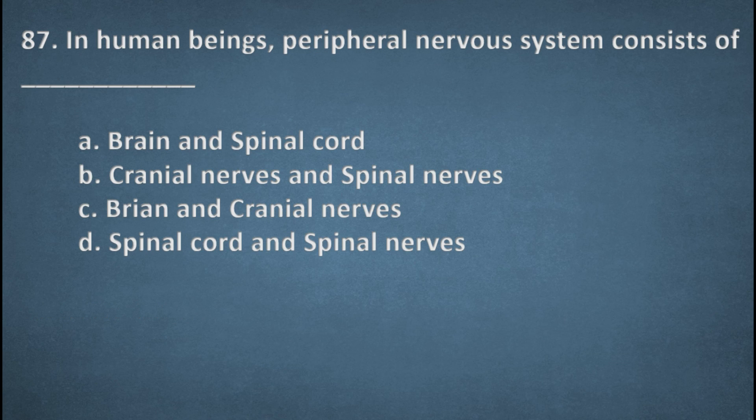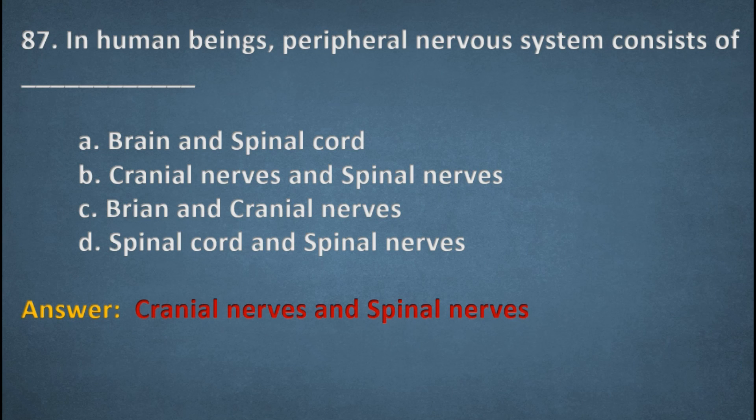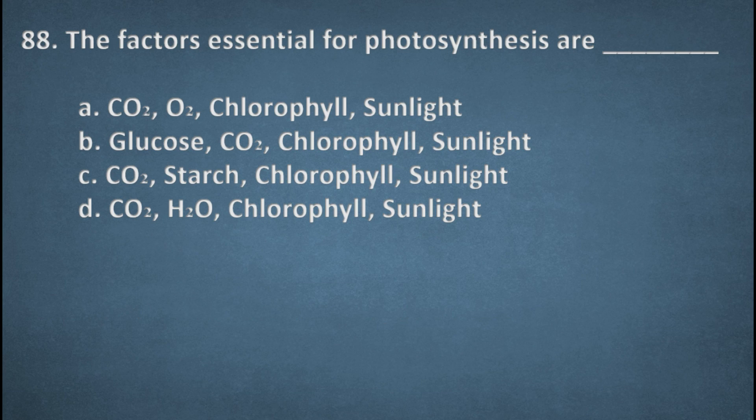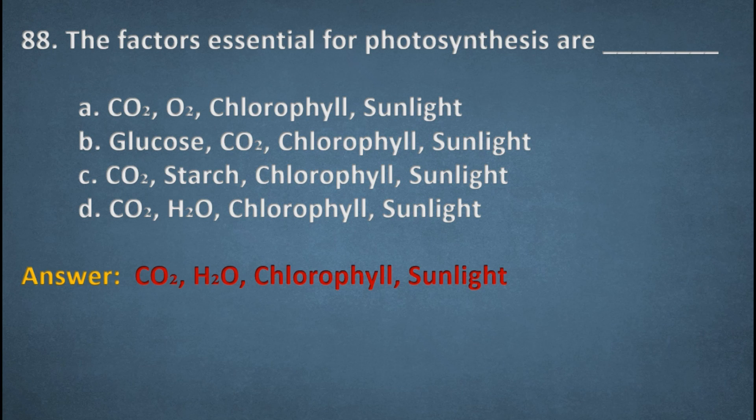Next one. In human beings peripheral nervous system consists of. Options: Brain and spinal cord, Cranial nerves and spinal nerves, Brain and cranial nerves, Spinal cord and spinal nerves. Right option B, Cranial nerves and spinal nerves. Next one. The factors essential for photosynthesis are. Options: Carbon dioxide, oxygen, chlorophyll, sunlight; Carbon dioxide, chlorophyll, sunlight; Carbon dioxide, starch, chlorophyll, sunlight; Carbon dioxide, water, chlorophyll, sunlight. The right option, D, carbon dioxide, water, chlorophyll, and sunlight.